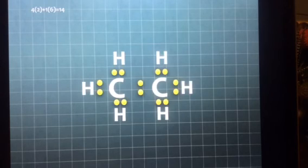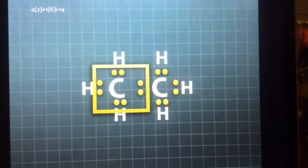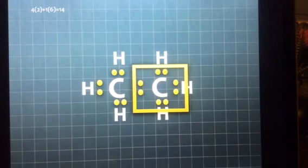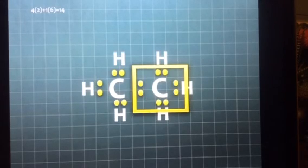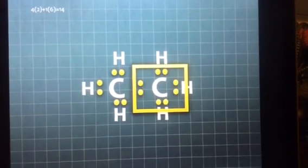Now we check for the octets. Since we already know that hydrogen only needs two valence electrons for the octet, we can set that aside and check the carbons. The carbon molecule has eight, making it an octet. And the other one also has eight. And this is how you make a Lewis-Dot diagram of C2H6.